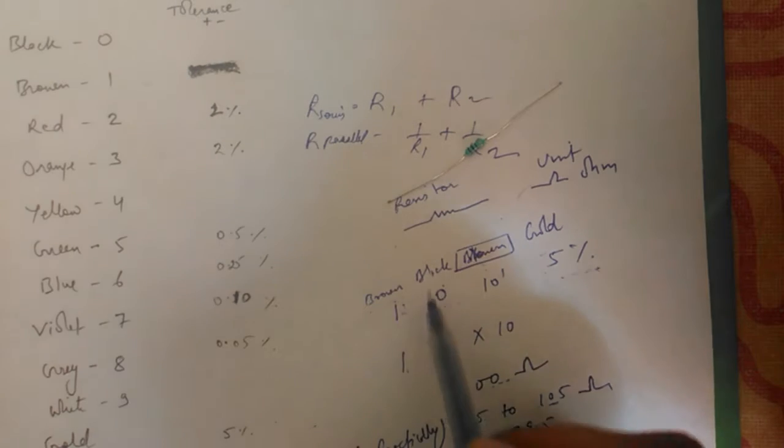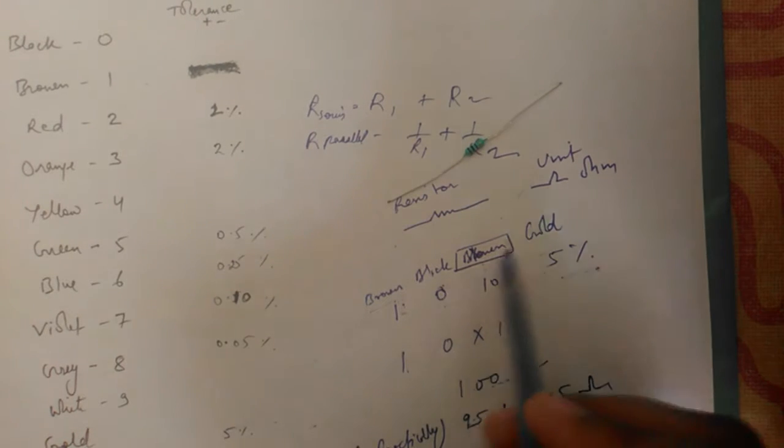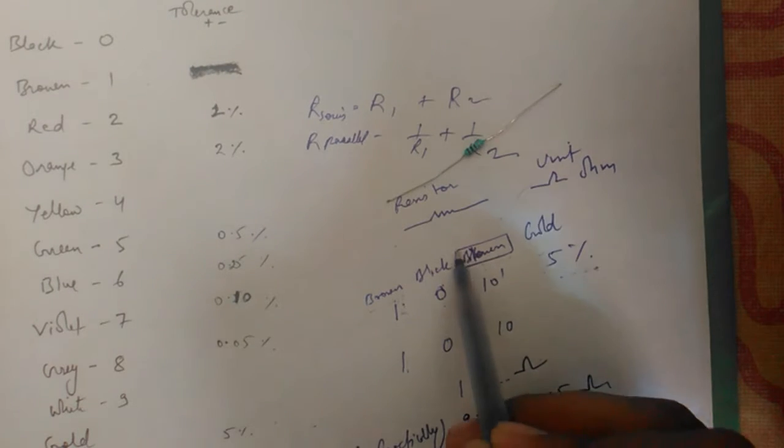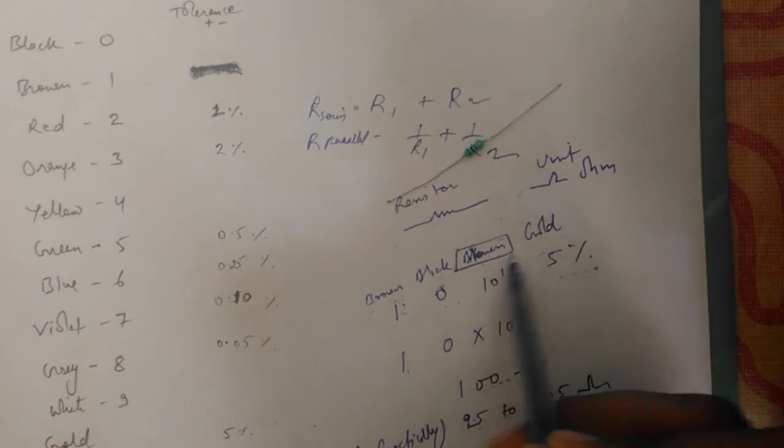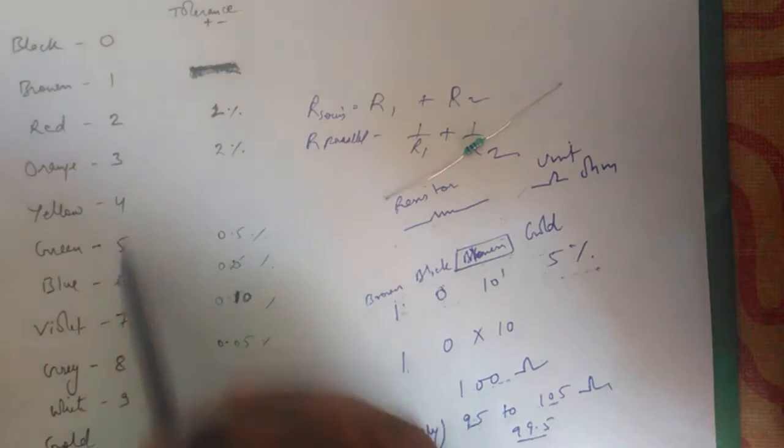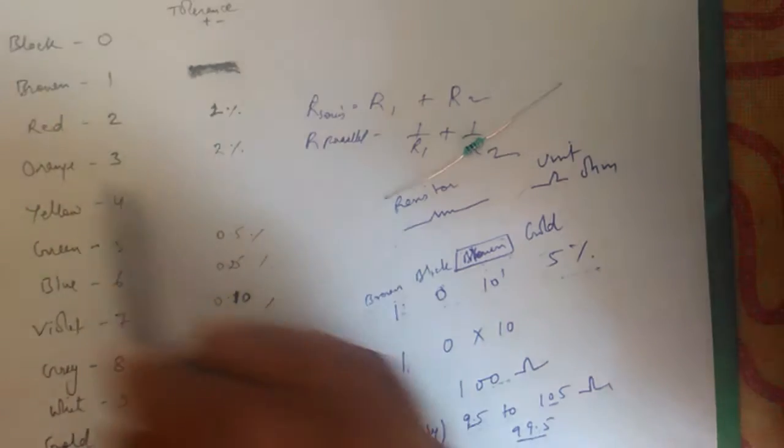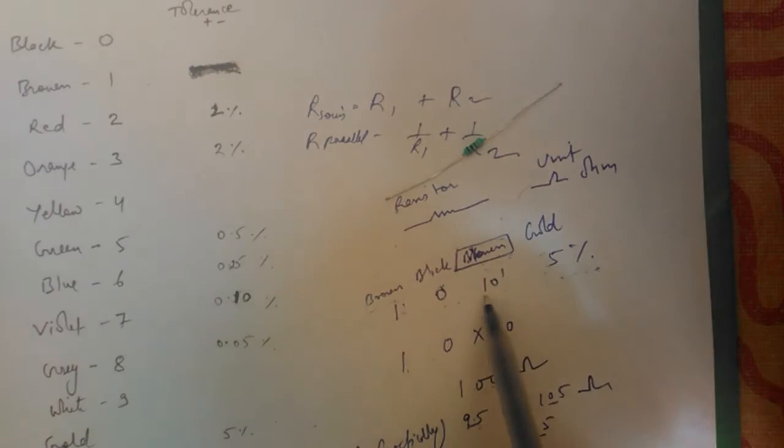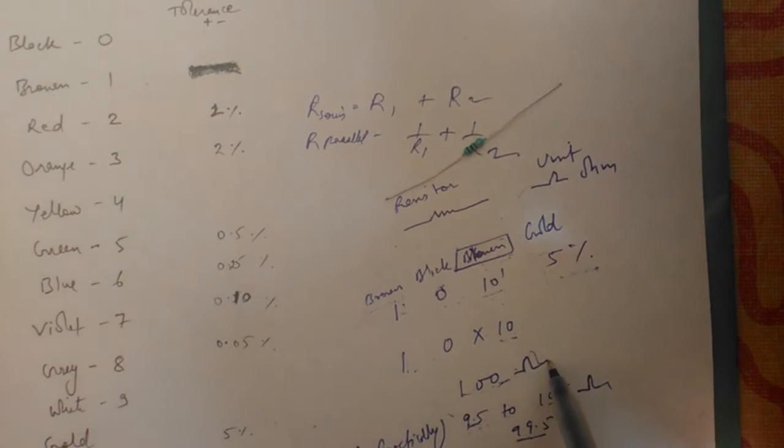For brown, one number is there, so directly write 1. For black, zero is there, so write 0. Then brown again. This third digit is 10 to the power, so brown color is 10 to power 1. Here you can see, 10 to power 1 means 10, so we multiply this and we get 100 ohm.